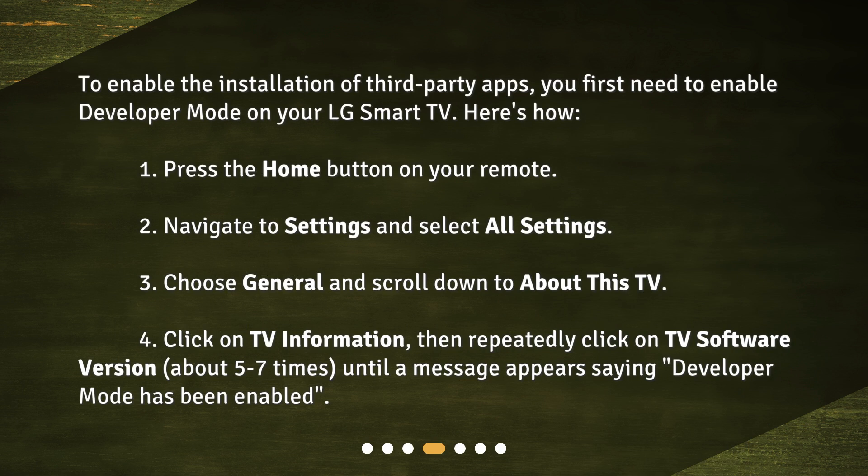Here's how. 1. Press the home button on your remote. 2. Navigate to Settings and select All Settings. 3. Choose General and scroll down to About This TV. 4. Click on TV Information, then repeatedly click on TV Software Version about 5 to 7 times, until a message appears saying developer mode has been enabled.